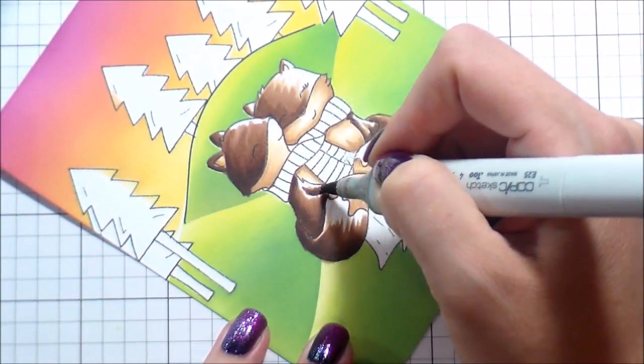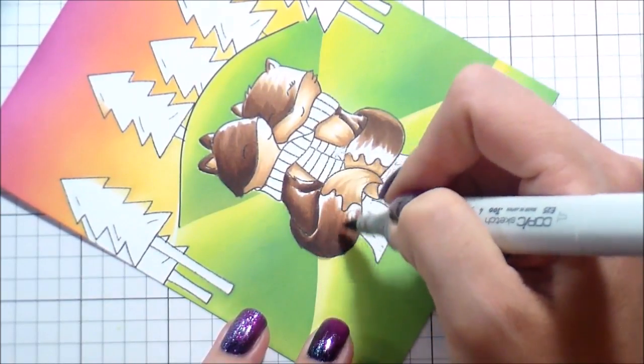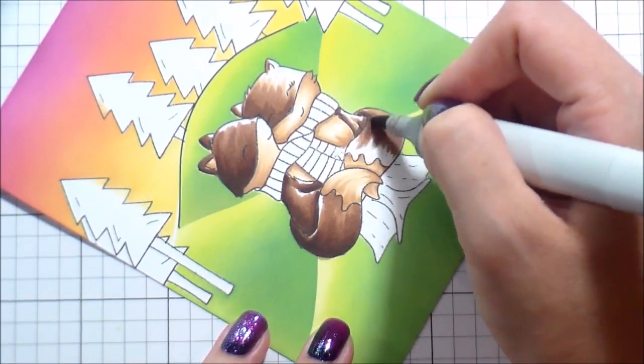So I'm working on blending that out. I blended out with the 27. Now we're back onto the 25, which is going to be the majority of the shading. Cause remember our lightest color is the E23.